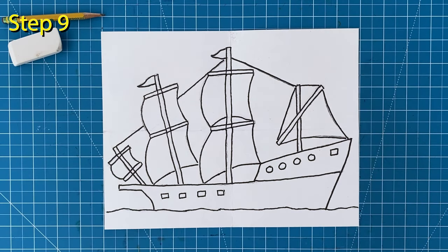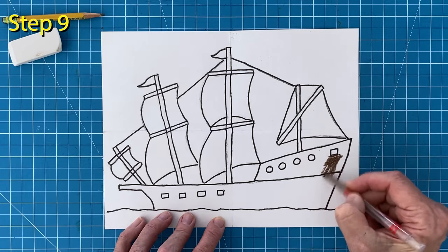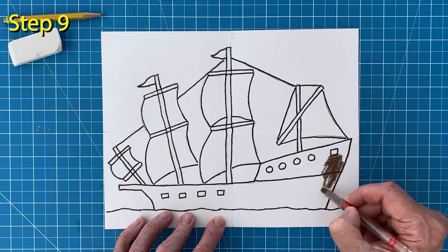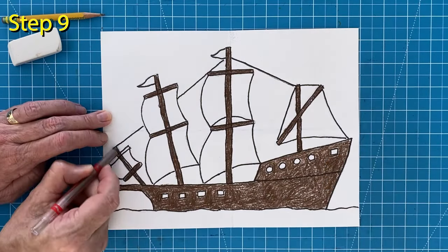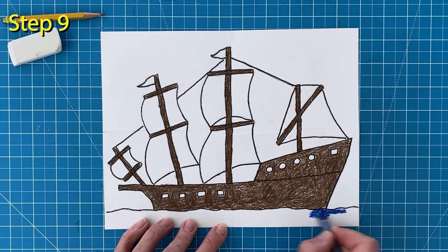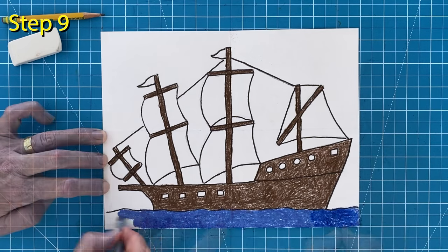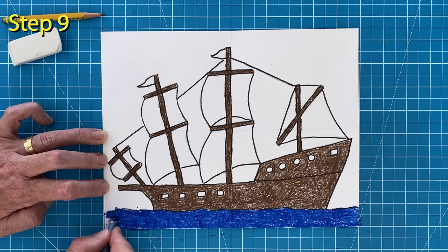And now it is coloring time. That wooden ship obviously needs to be brown. The same goes for all those poles and masts. I'm gonna color my water a dark blue so it looks different from the sky. A bluish green would look pretty though too. It's up to you.